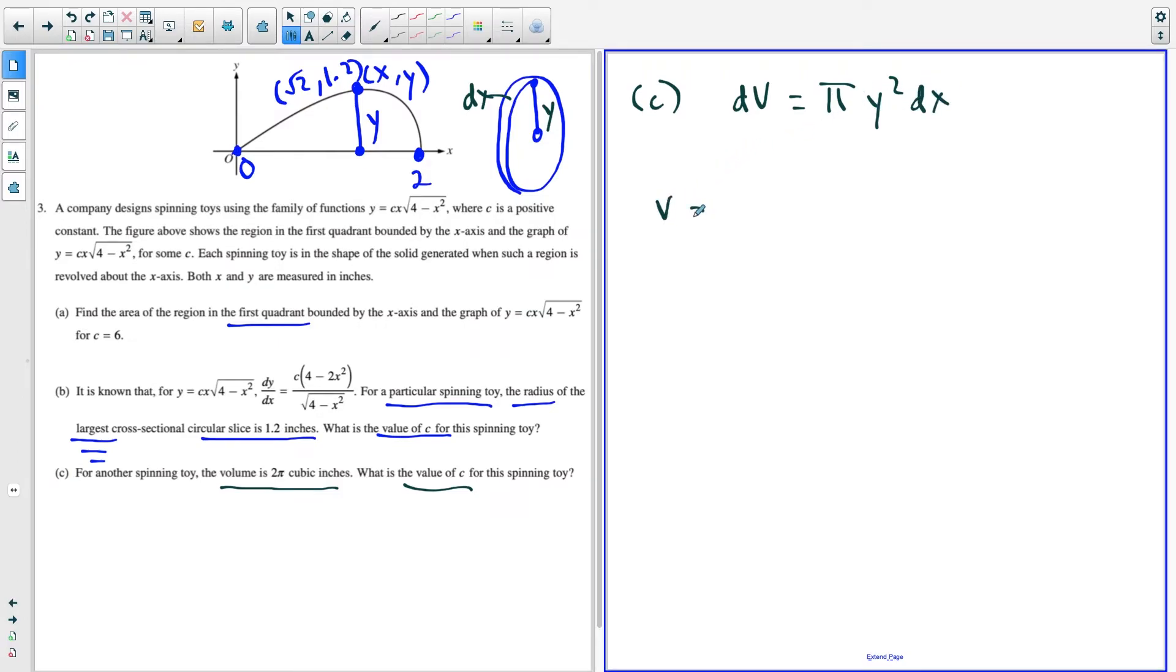So then if we want to find the volume of the entire toy, it's going from zero to two. So I have pi times the integral from zero to two, y squared. I'm going to use this equation.